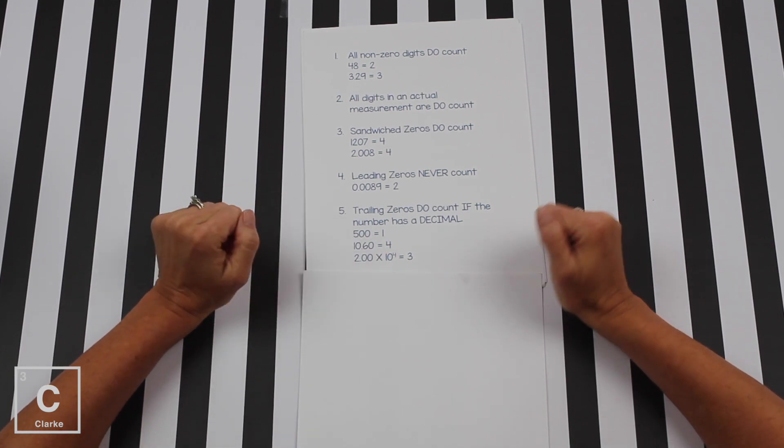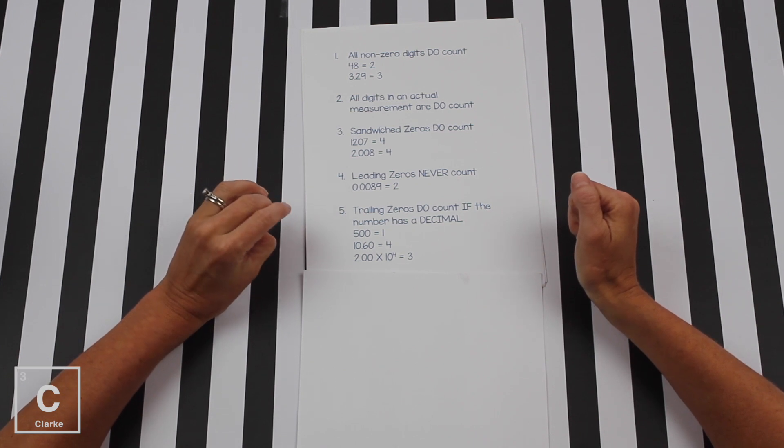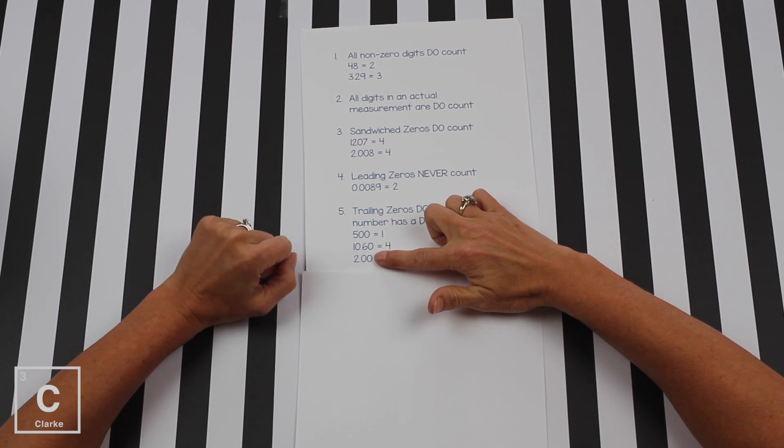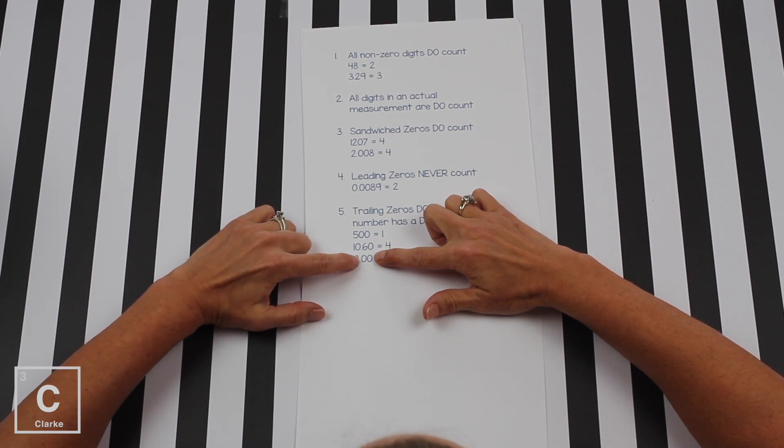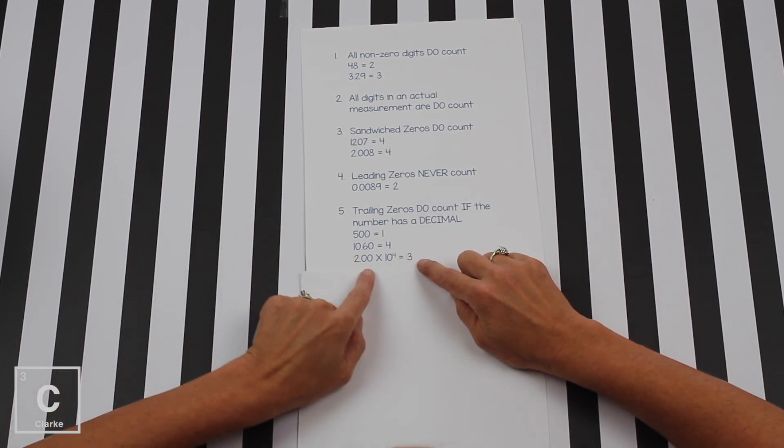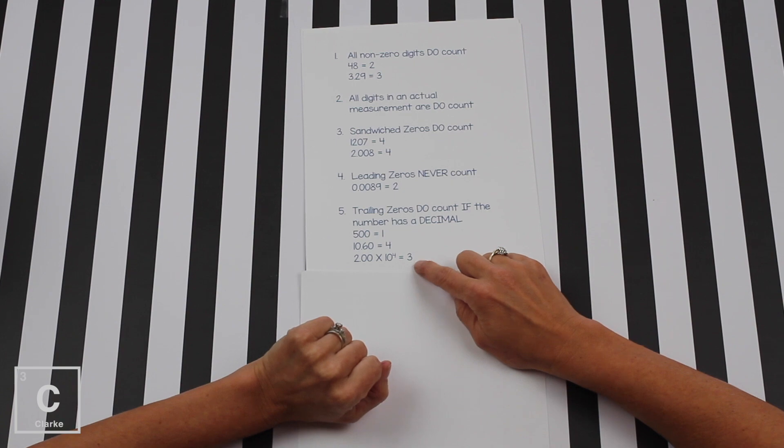Now you may notice that this last number I wrote, I put it in the form of scientific notation. That's to show you the number in front of the X for scientific notation. Every digit is significant. And it's kind of in the design, because remember, one number and then a decimal is scientific notation. Well, if there's a decimal in the number, the trailing zeros count. There's always going to be a decimal here. So they're always going to count. Scientific notation, all the numbers in front of the X, always significant, three SIGFIGS.